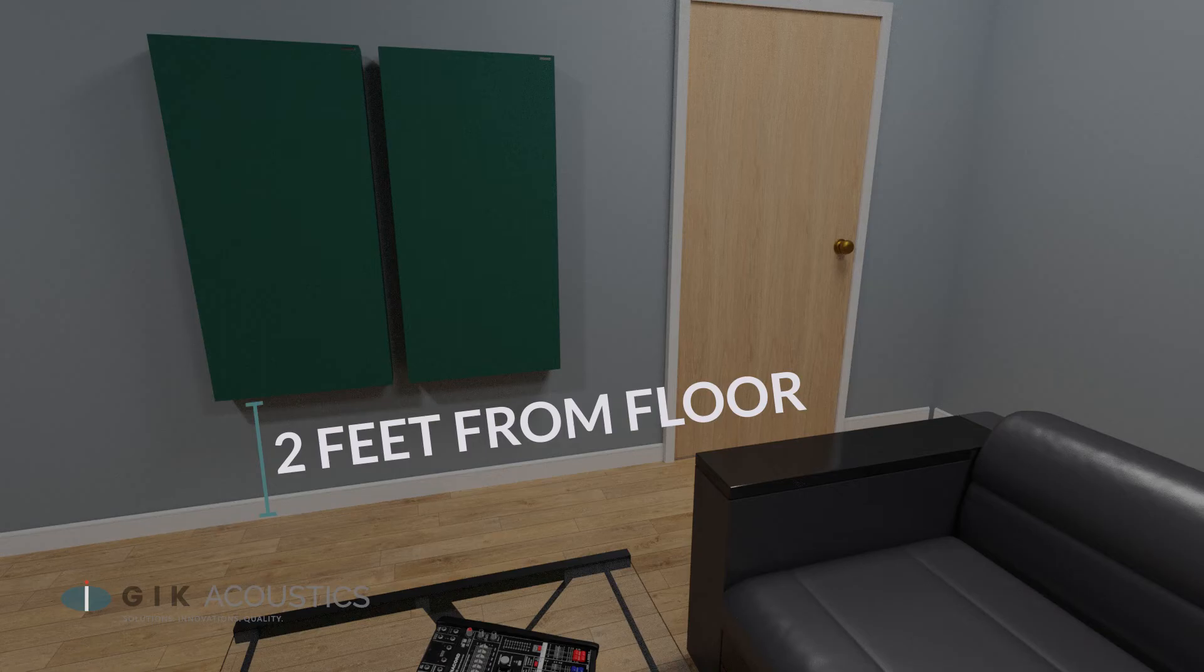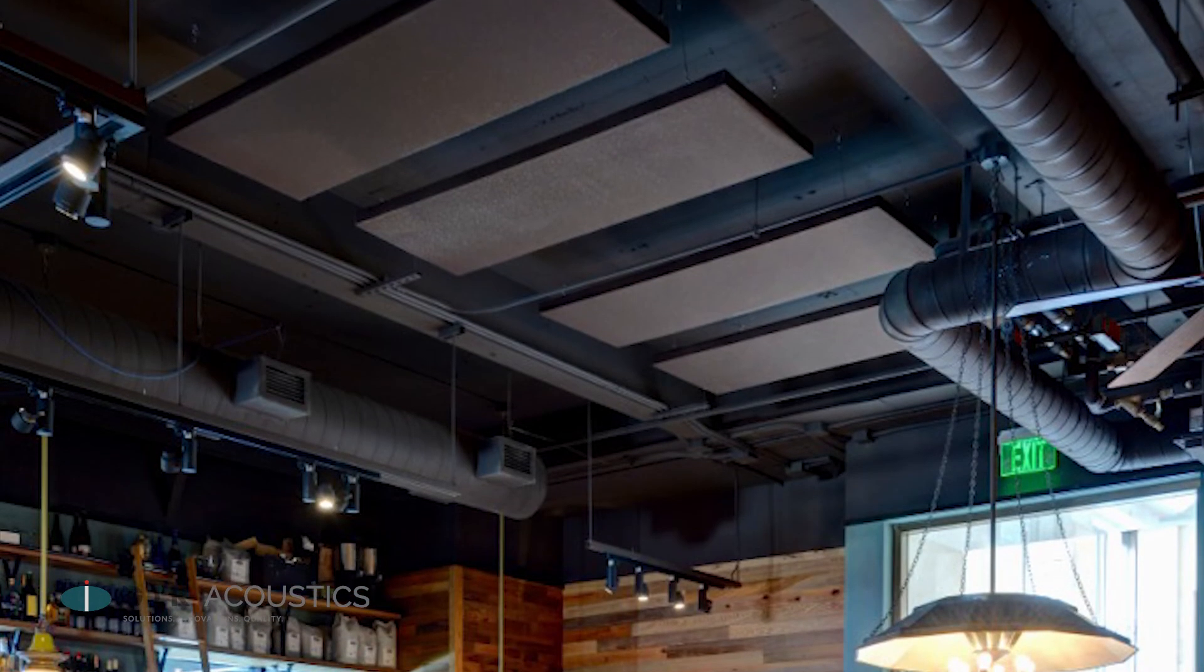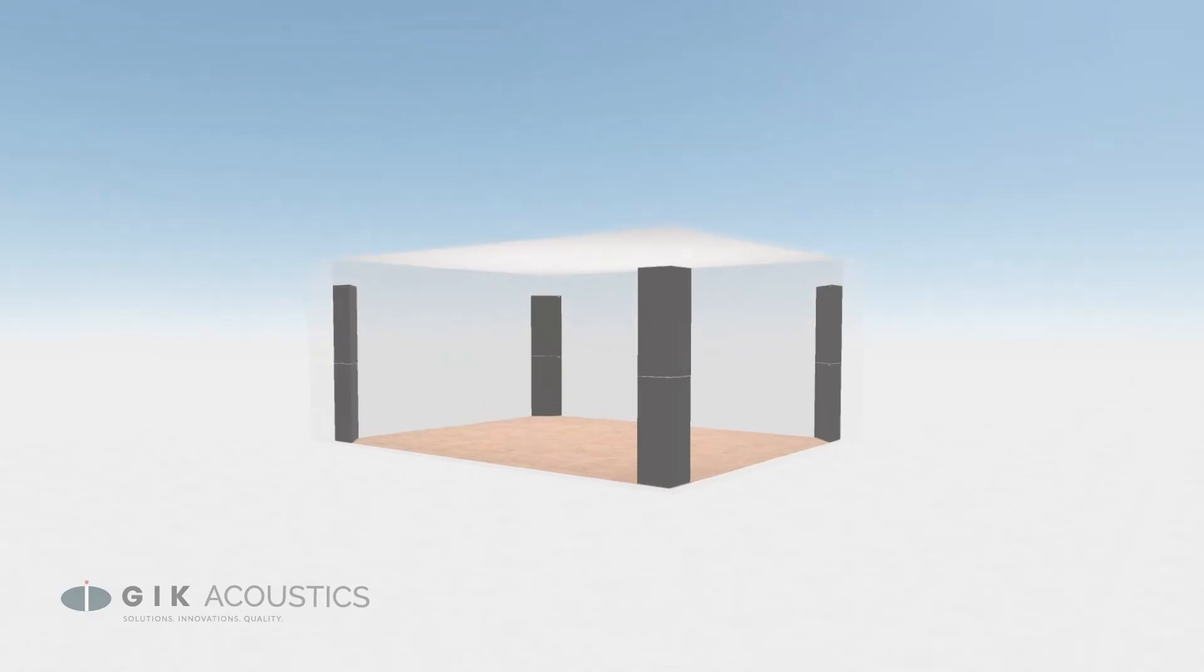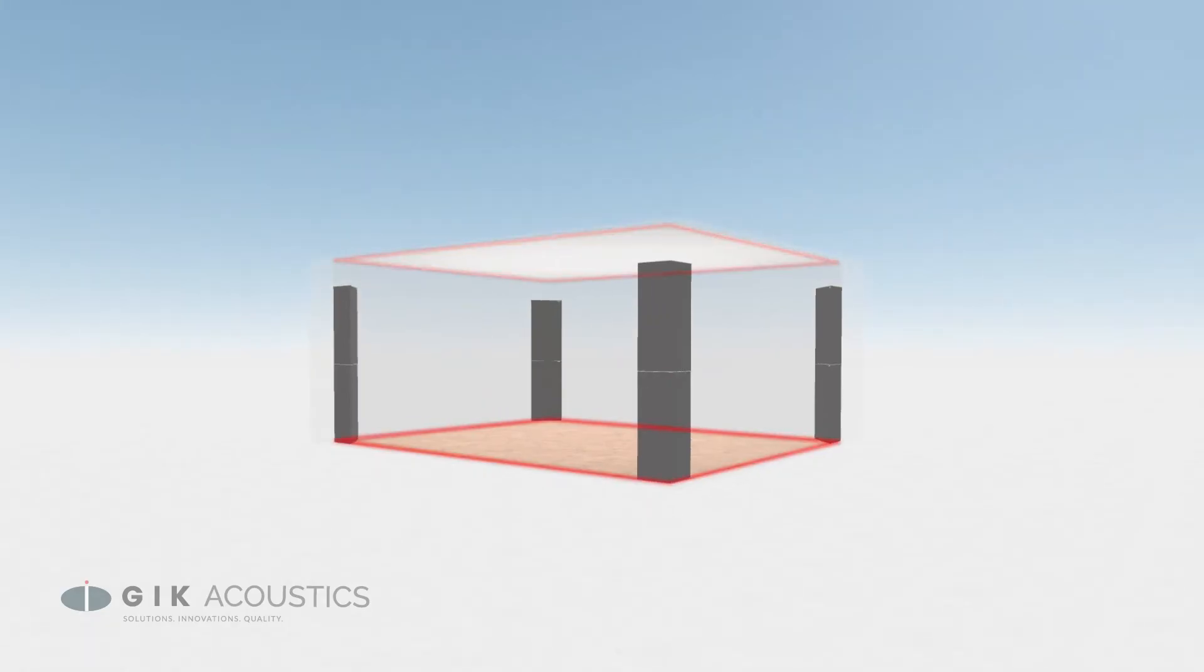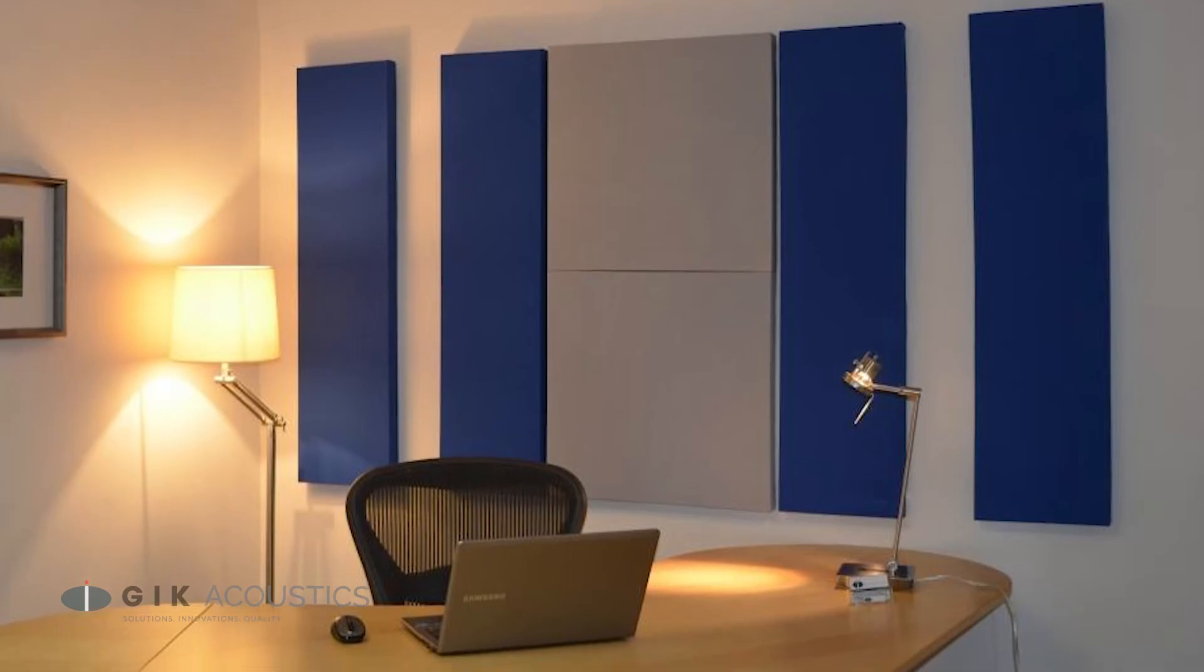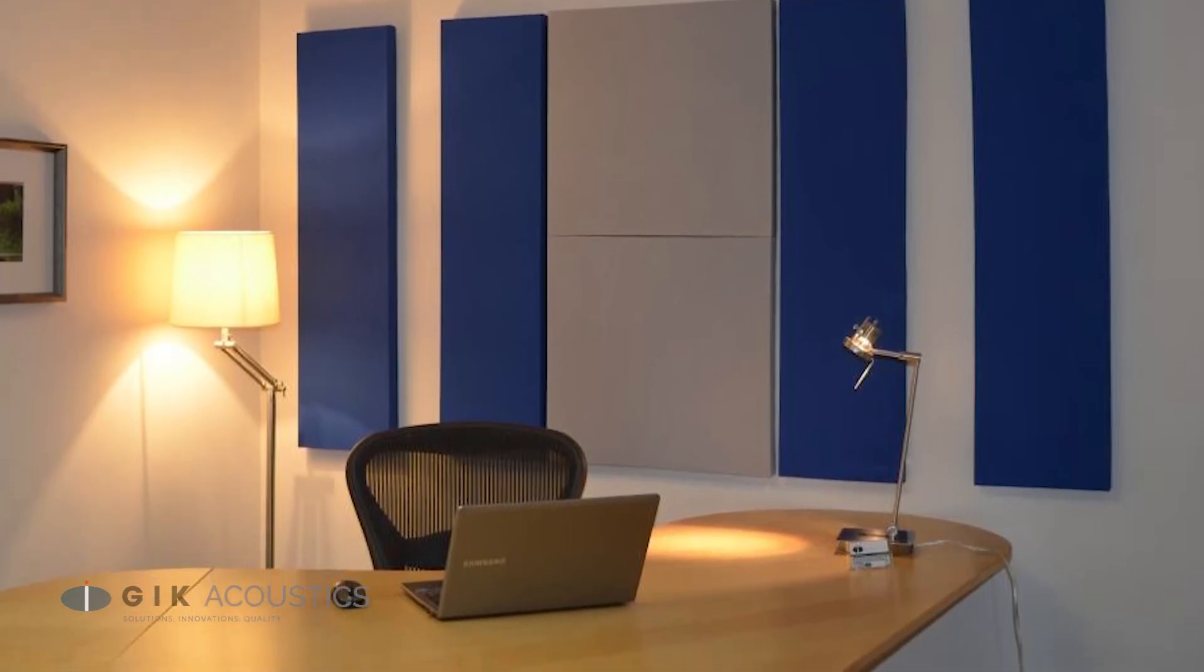For a 2x4 panel mounted vertically, ear level is about two feet from the ground. Additional panels can be used on the ceiling for additional absorption or in the horizontal room corners for better bass response. But most of your treatment will likely work best at ear level.